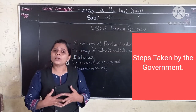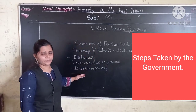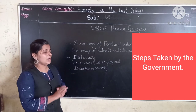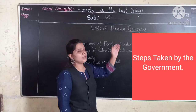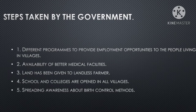Now let's discuss what steps the government has taken to solve all these problems. The government has taken various steps to minimize the problems caused by overpopulation. First, the government has organized different programs to provide employment opportunities.